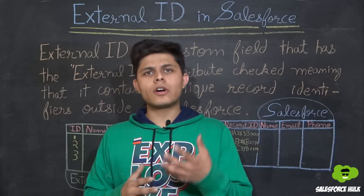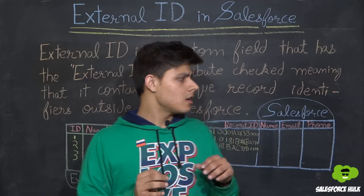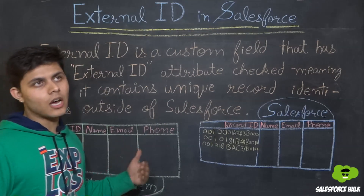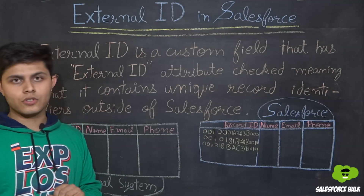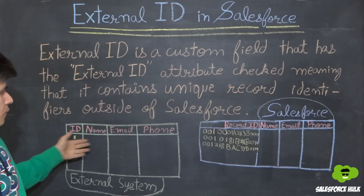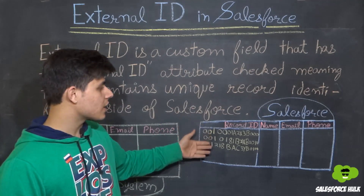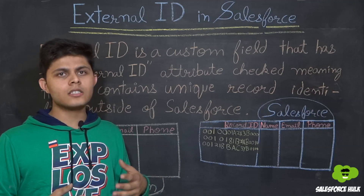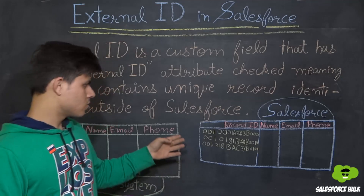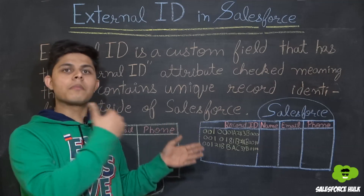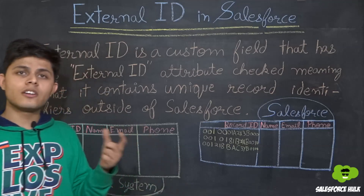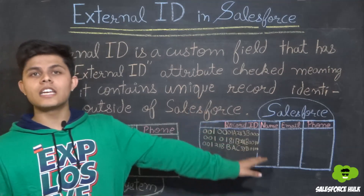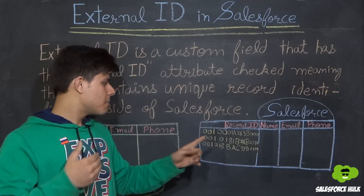To help you understand what external ID is, let me take a simple example. Let's say this is your external system from which you want to import, update, or upsert records into your Salesforce. These are the record IDs — unique identifiers of each and every record in your org. Whenever we are updating or upserting records, we generally select record ID as a unique identifier so that records get matched based on record IDs.